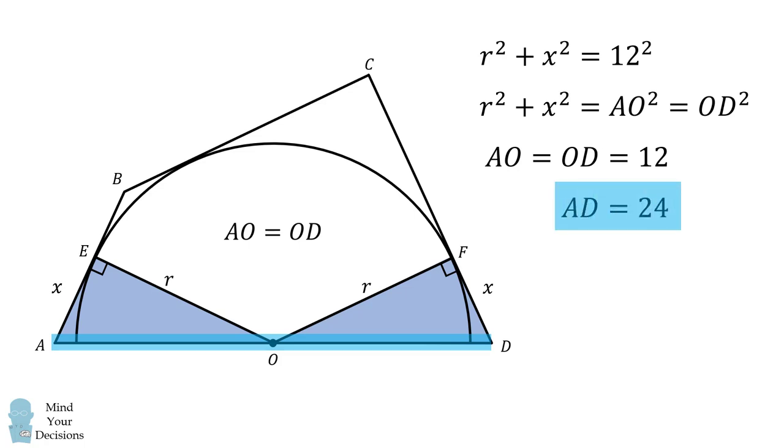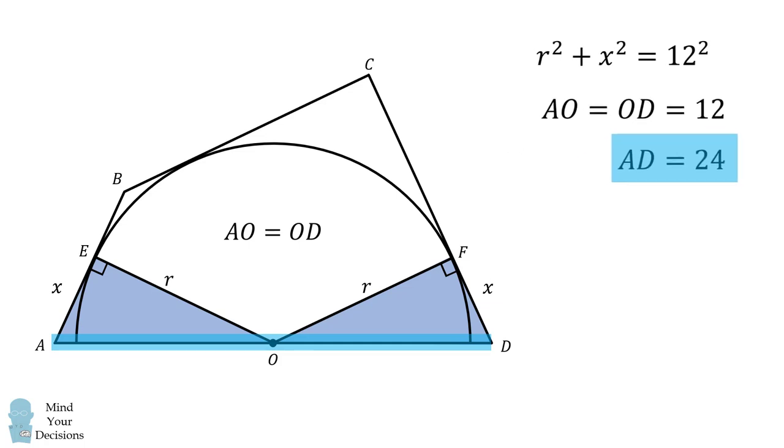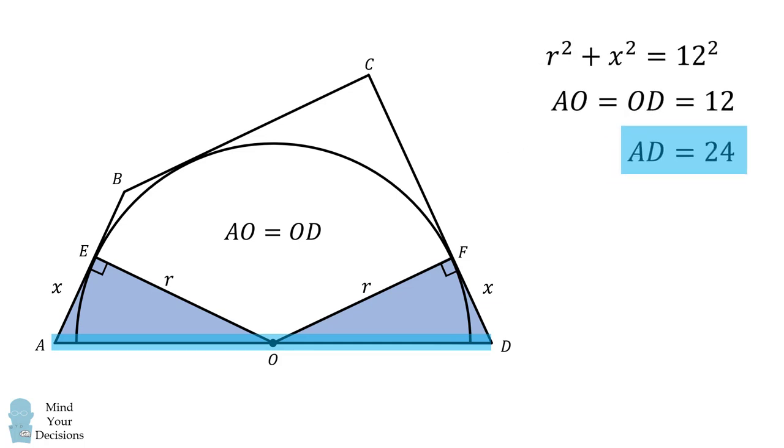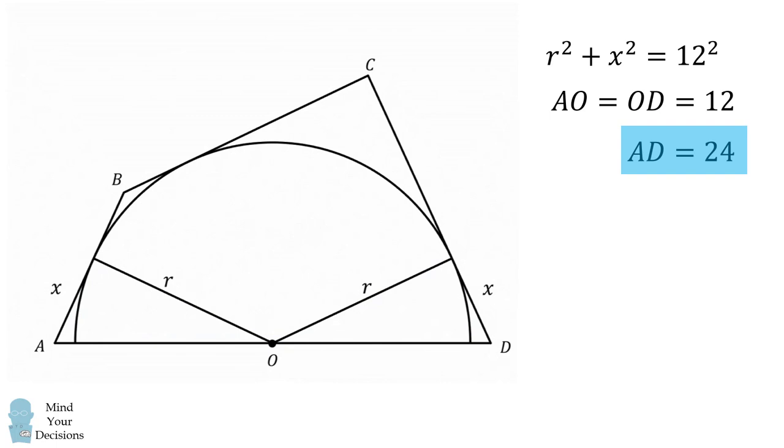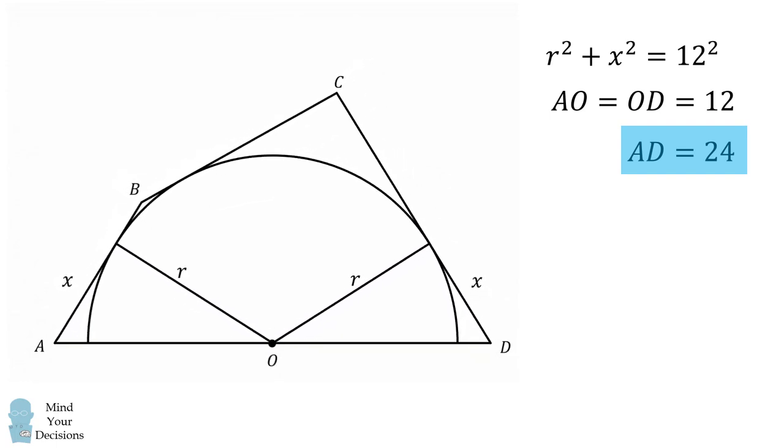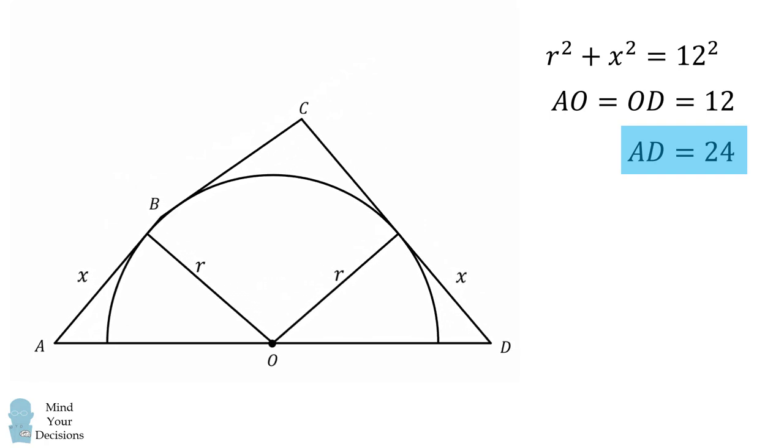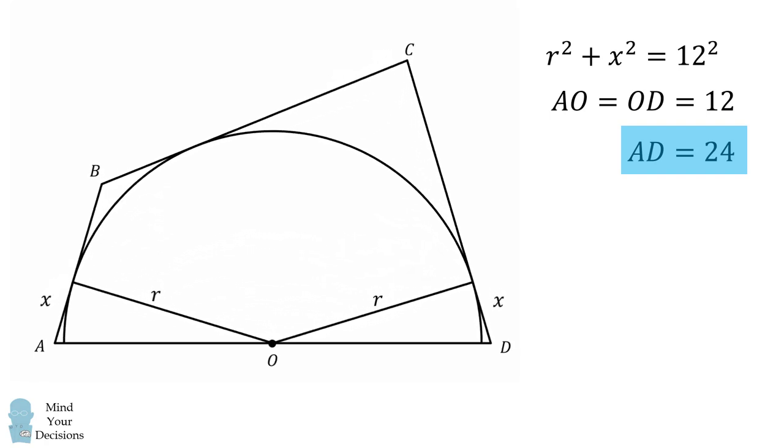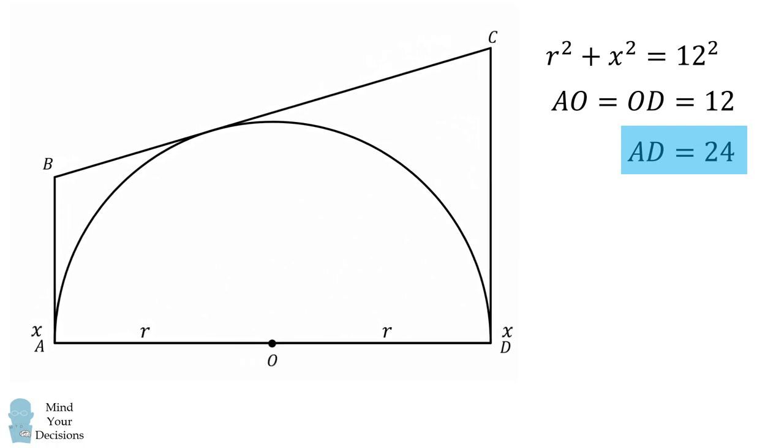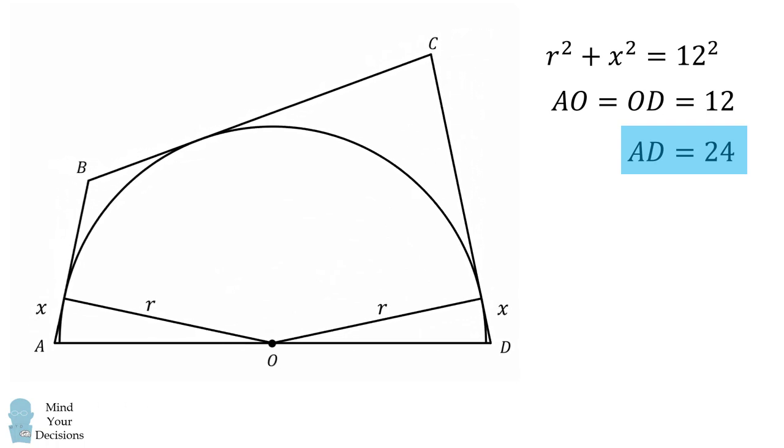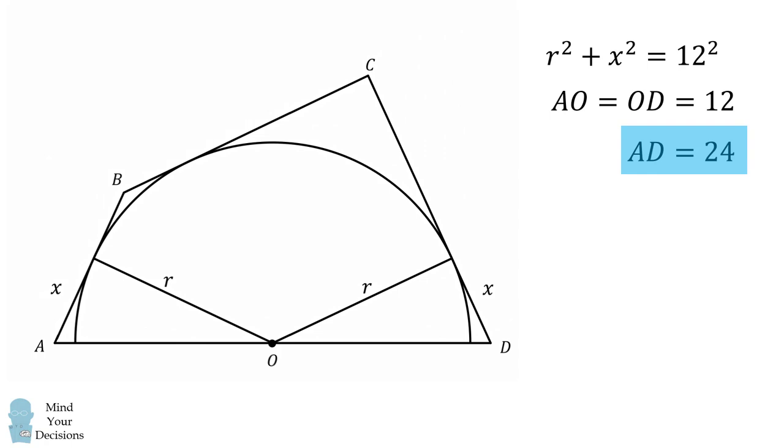Now you might be wondering if you could solve for the value of r or the value of x. The answer is no. The reason is this diagram actually corresponds to a family of different quadrilaterals, as I will show you in the following animations. While we cannot solve for the value of r or x, we can see that in all of these quadrilaterals, we have the same constant distance of AD. And I think that's quite fascinating.